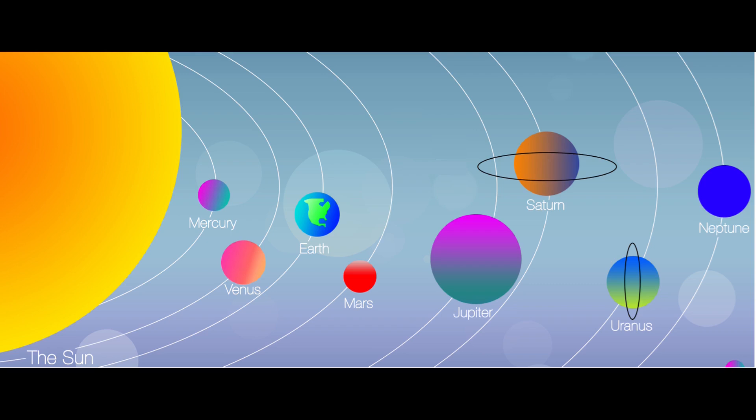Second is Venus. Venus is kind of like Earth's twin because they are similar in size. But it's very hot there, hotter than an oven.